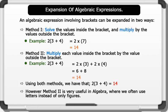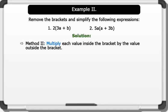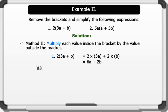Now let's see some examples. Example 2: remove the brackets and simplify the following expressions. 1) 2 bracket 3a plus b. Using Method 2, multiply each value inside the bracket by the value outside the bracket: 2 times 3a plus 2 times b equals 6a plus 2b. Therefore, 2(3a + b) equals 6a + 2b.